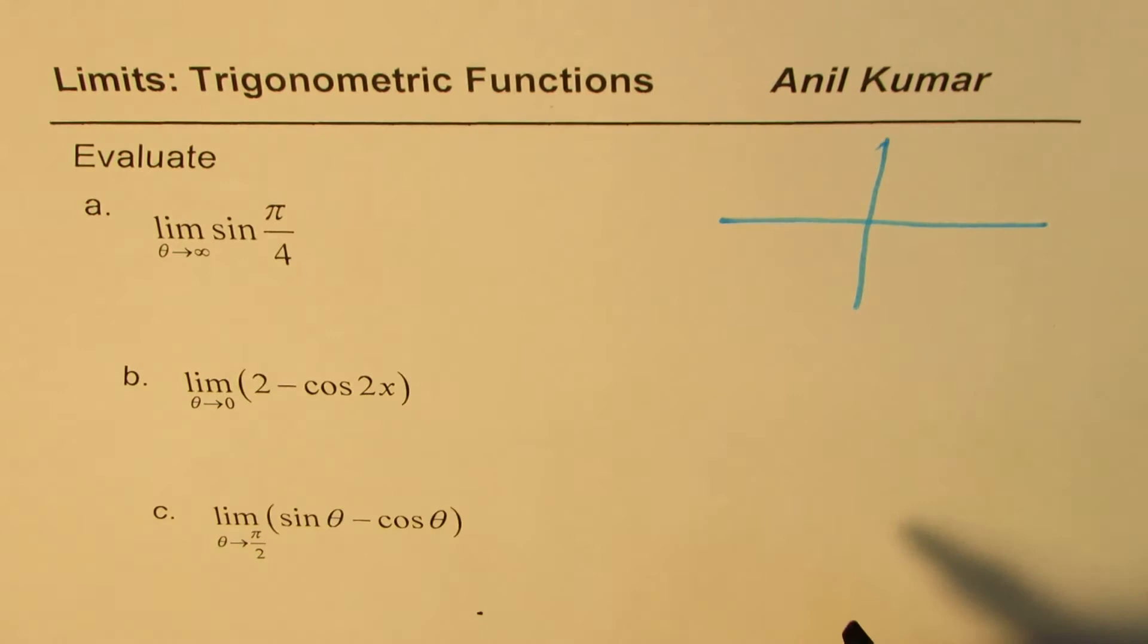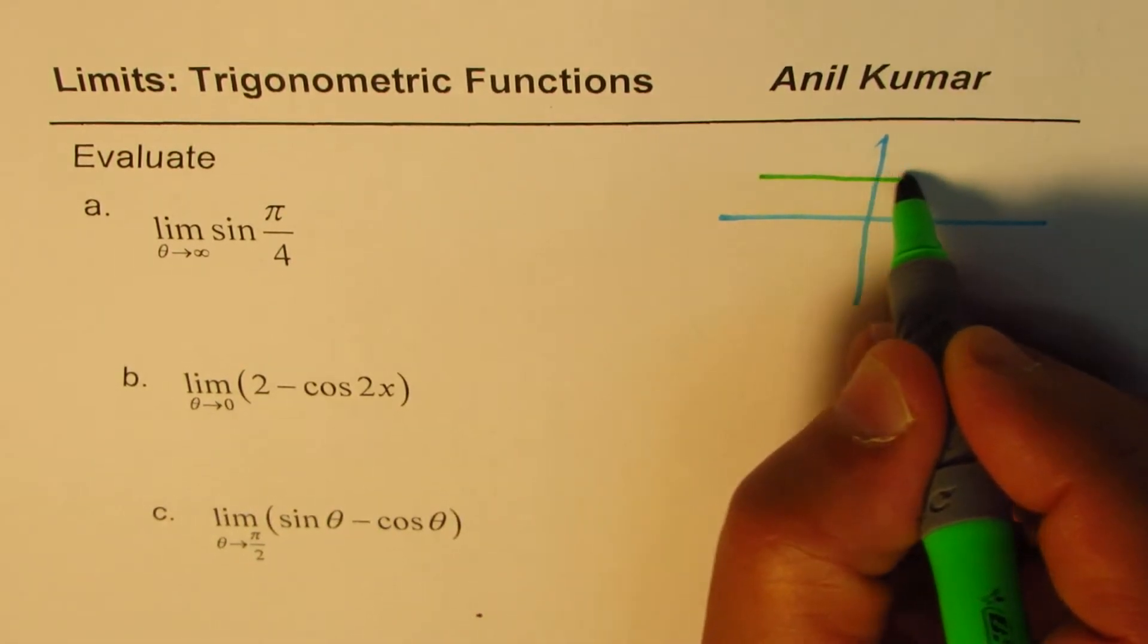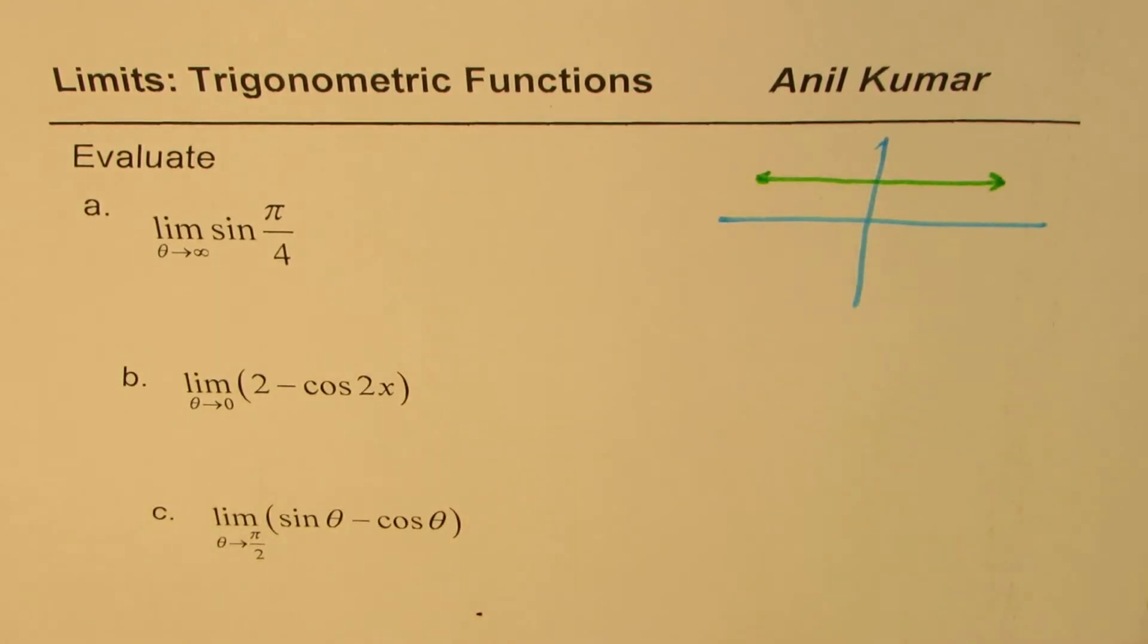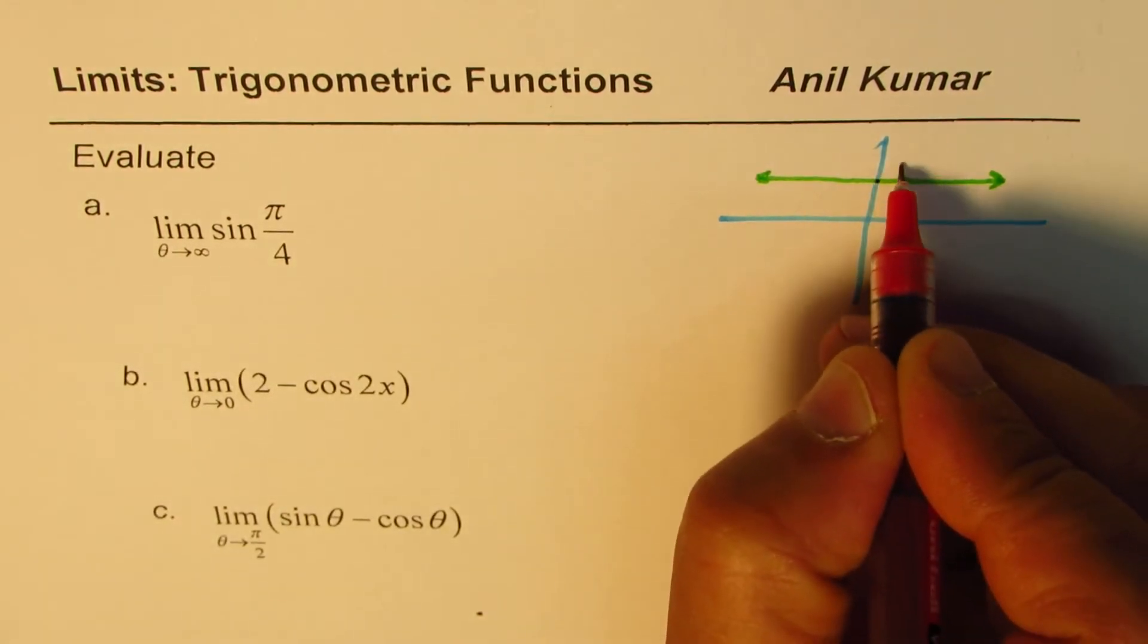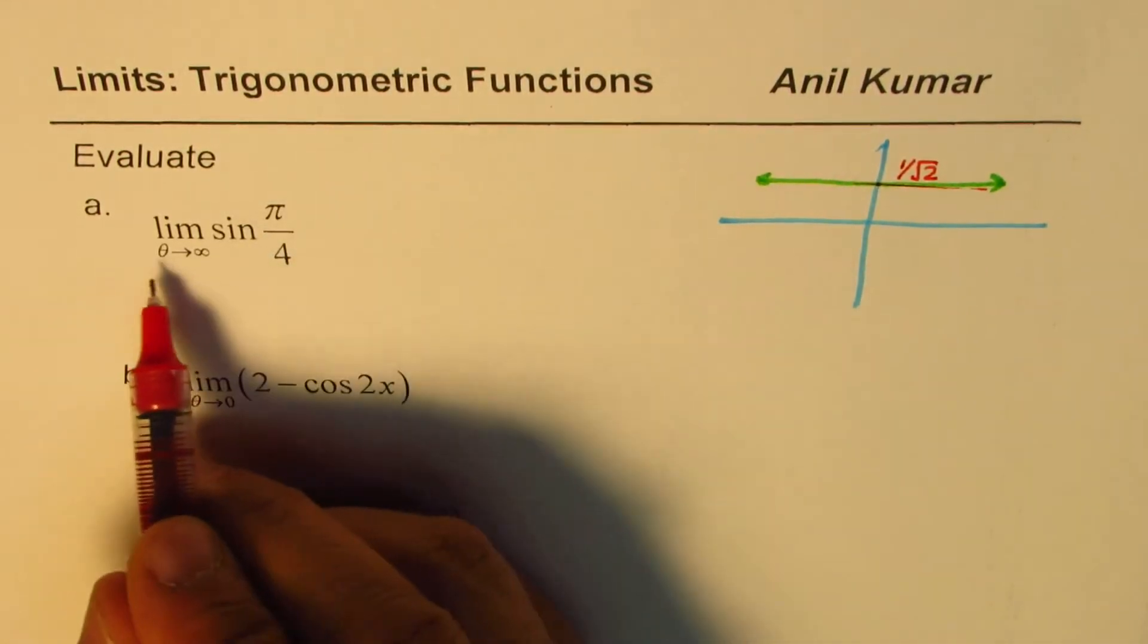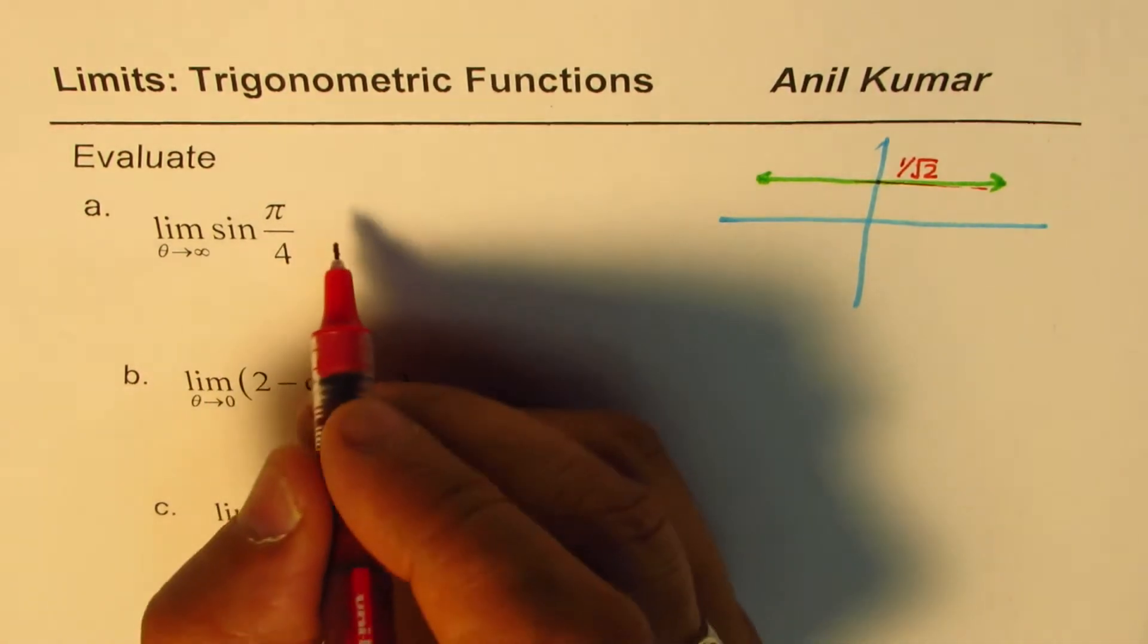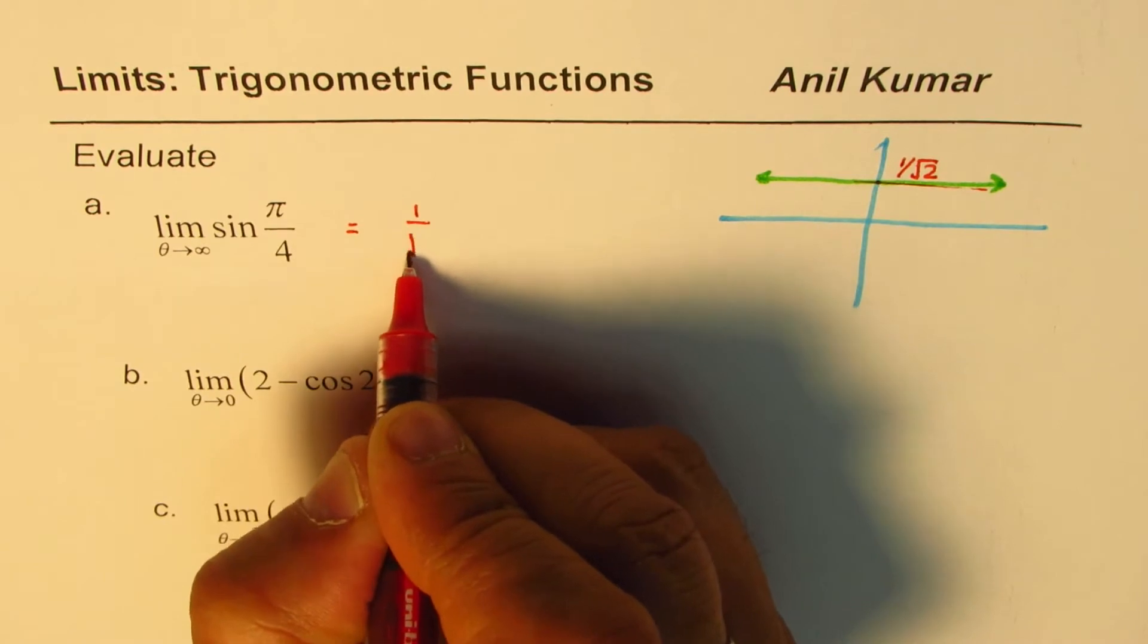When I say sine pi by 4, it is always positive and the value is 1 over square root 2. So this is always 1 over square root 2. Or you can say square root 2 over 2. Now since it is always this, then we are sure whether theta approaches positive infinity, the value will always approach 1 over square root 2.